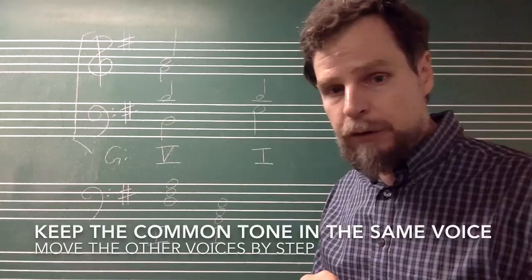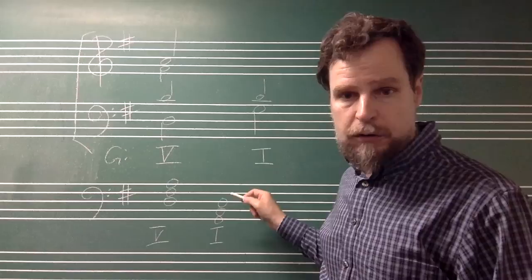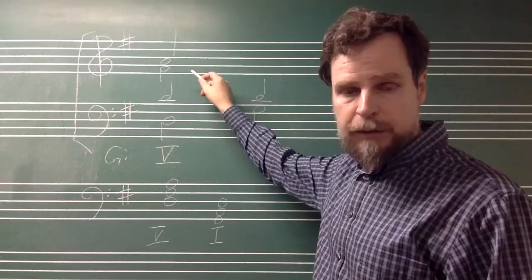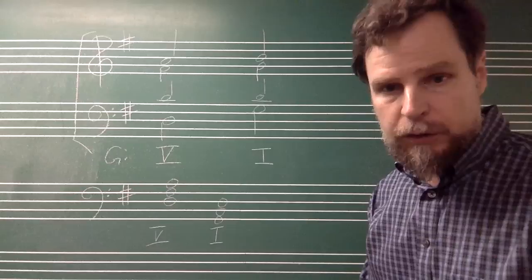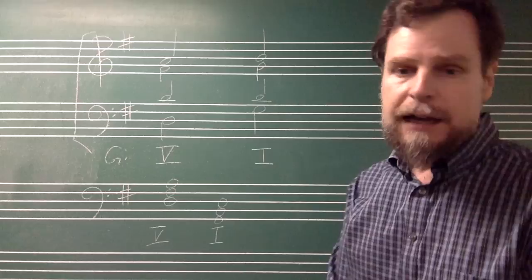And then the other voices will move nearby to notes of the chord. Now we have a G, B, D chord. We have our G, we have our D. And then you look at where the soprano and the alto are. They're on F sharp and A. And you can see that they can move nicely to G and B just by going up a step. This is what is called the common tone connection.